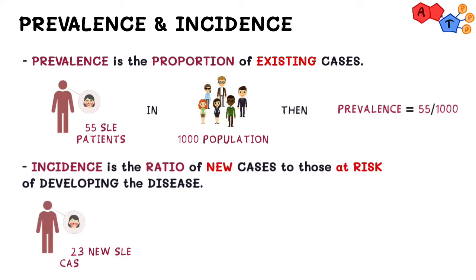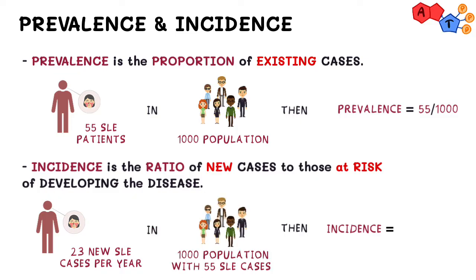If there are 23 people becoming afflicted with SLE each year, then the incidence of SLE per year for the same population that already has 55 people with SLE is 23 over 1,000 minus 55. Notice how the denominator has a subtraction in it, since the people that already do have the disease are not technically at risk of potentially developing it.